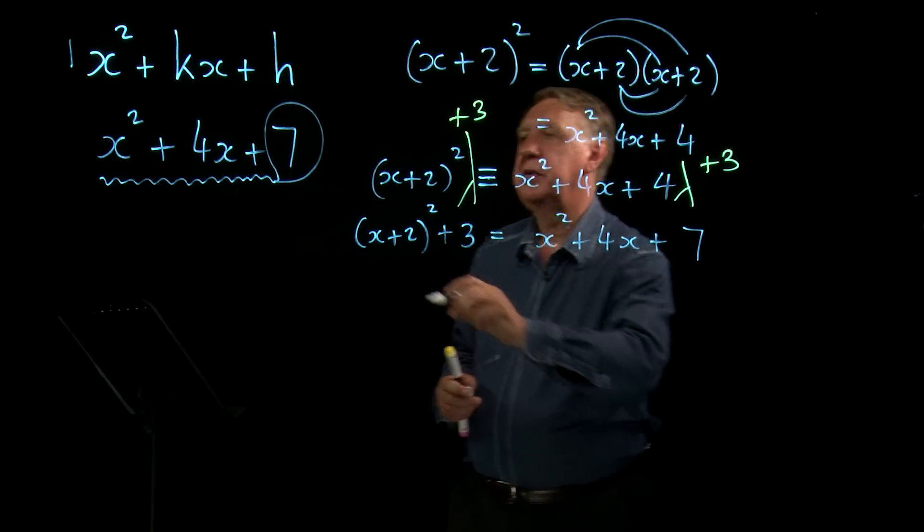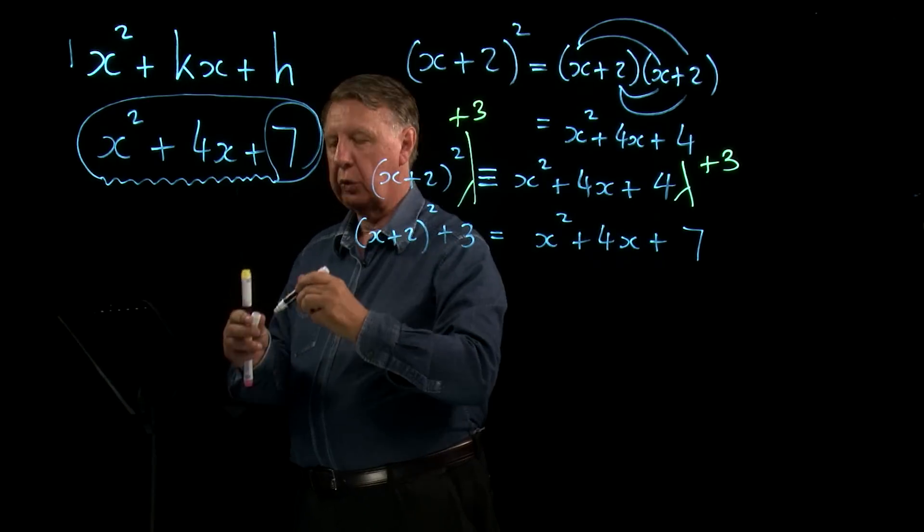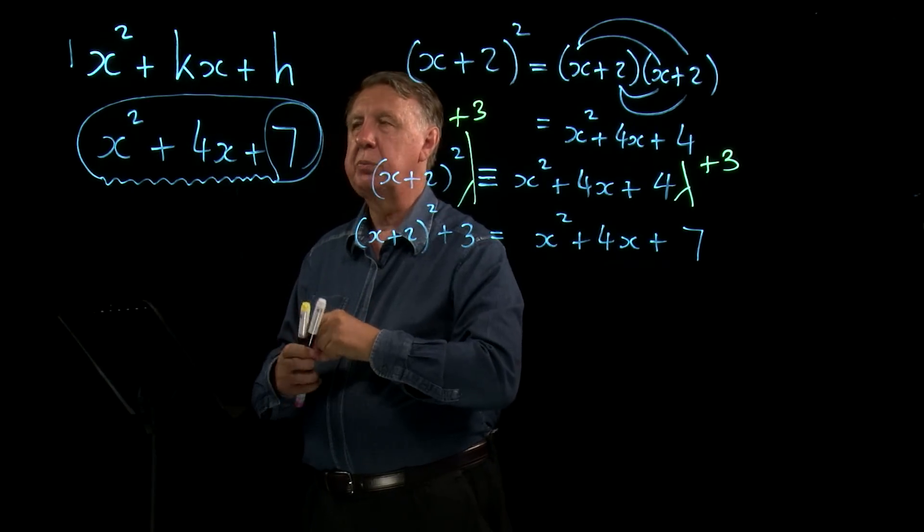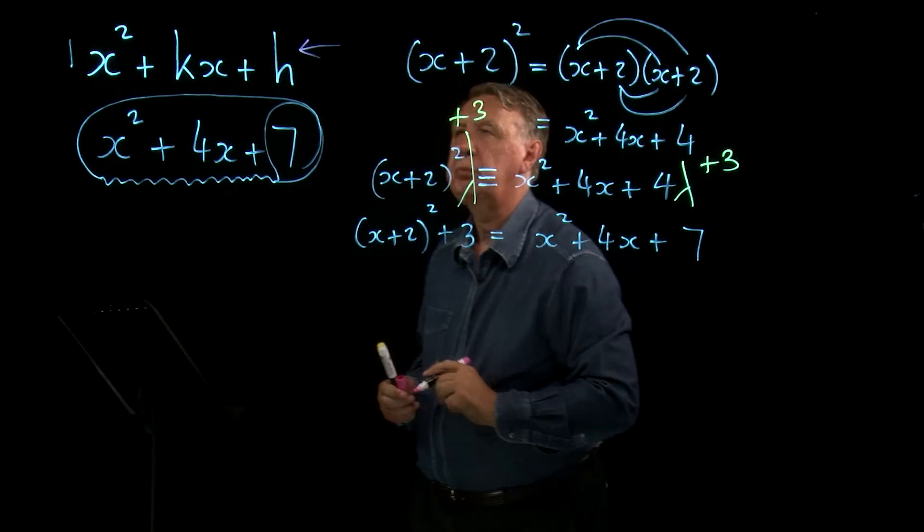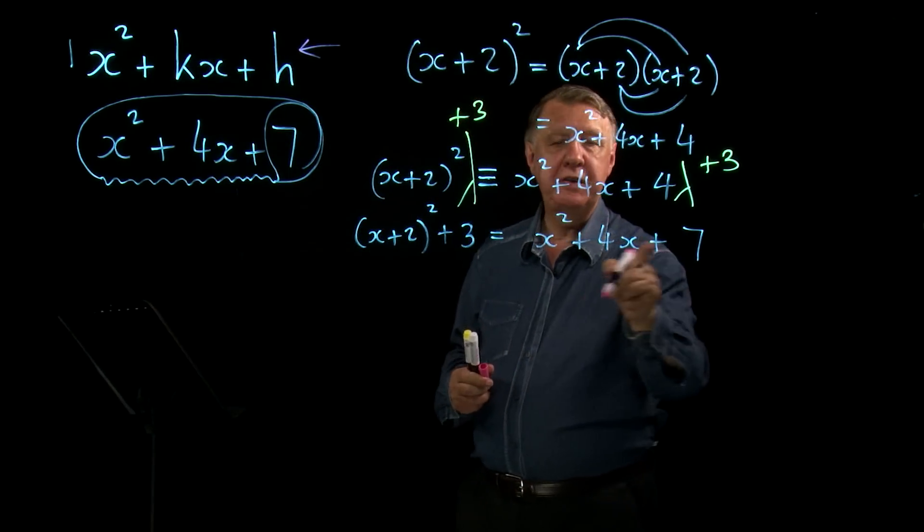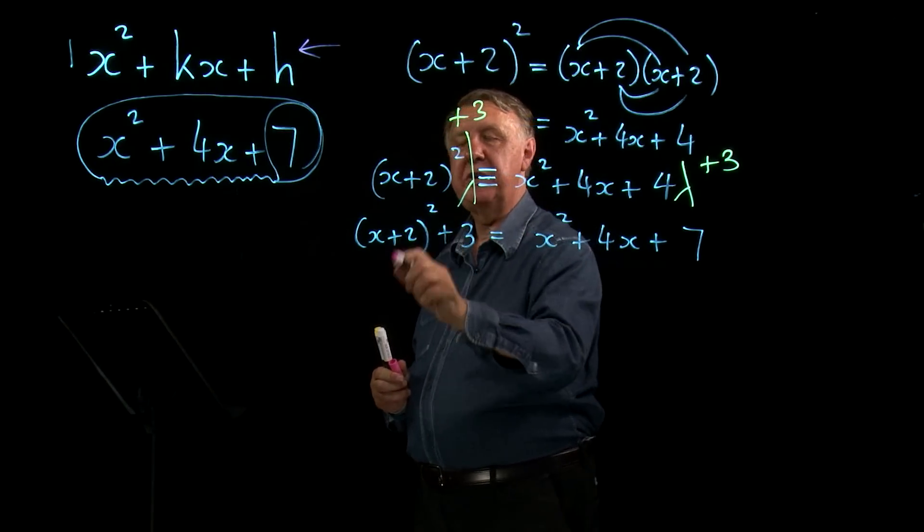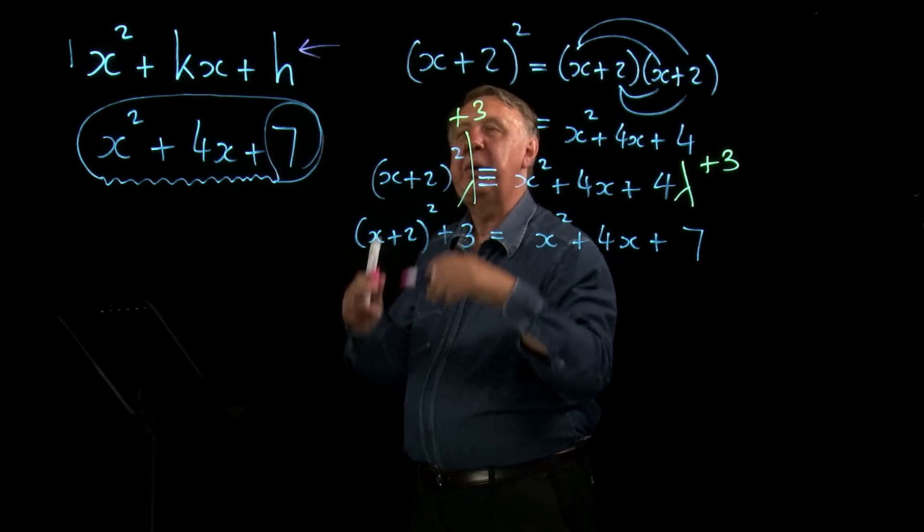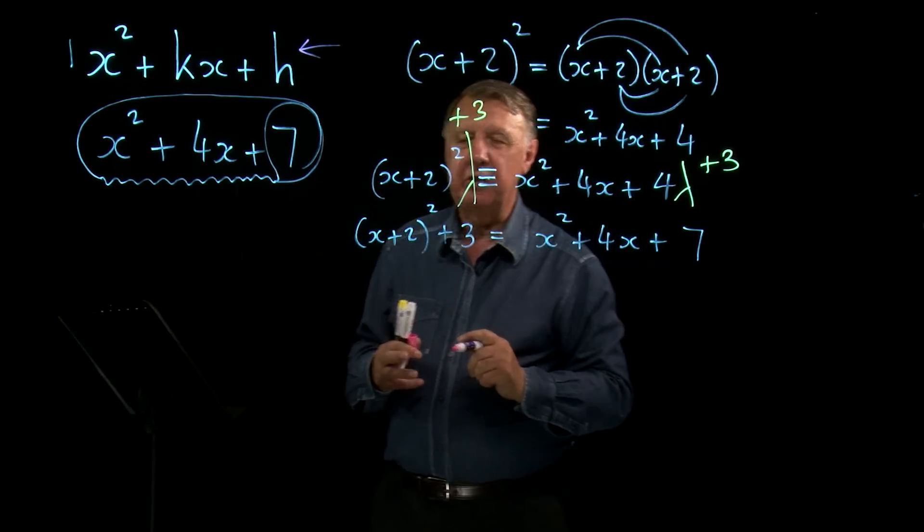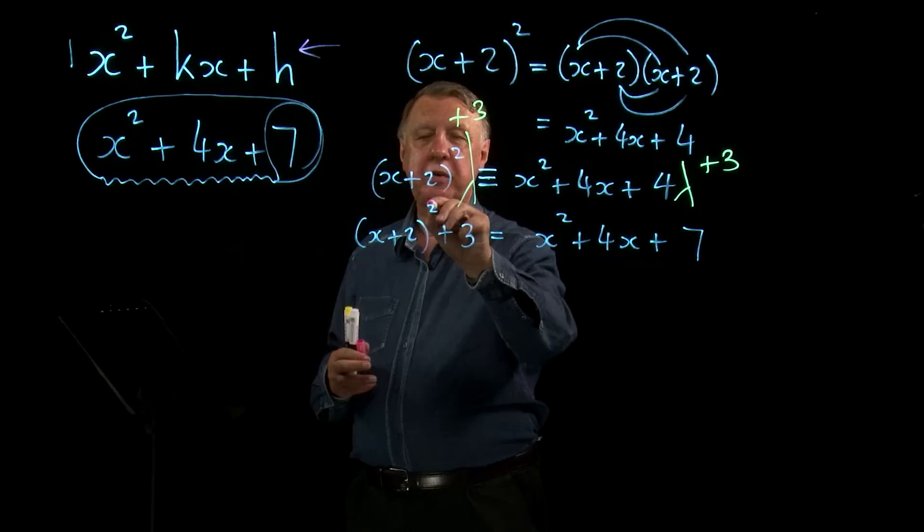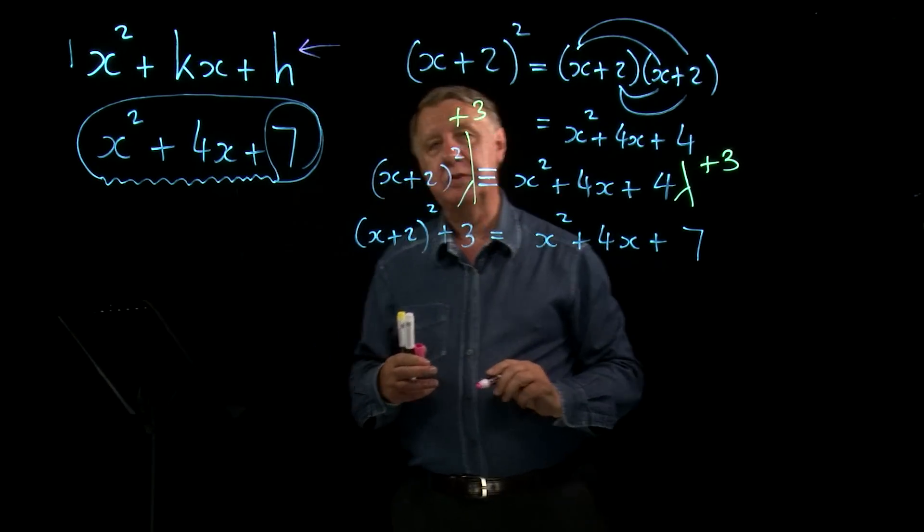So, I've started with this, which of course is an example of this type of thing here. And I've written it in a different way. And you'll notice that x no longer appears to be squared. Of course, it's a bit of a smoke and mirrors trick because it is going to be squared eventually because of that, but initially it doesn't look as if it's been squared.